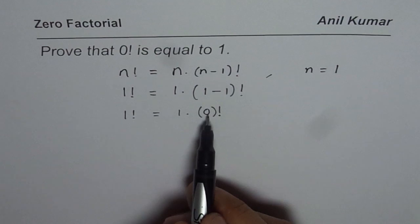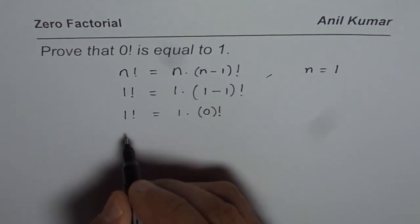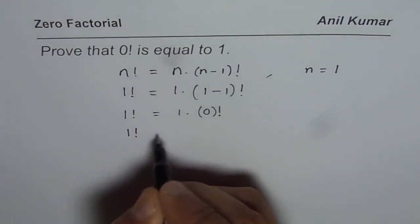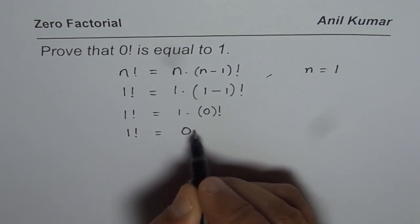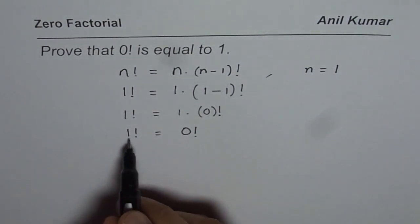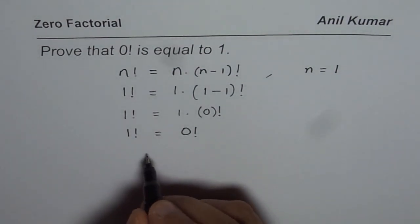Now, 1 times anything is the number itself. So, therefore, we say 1 factorial equals to 0 factorial. And I know what 1 factorial is, which is 1.